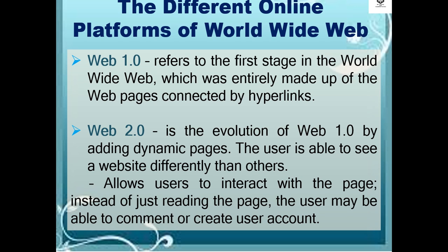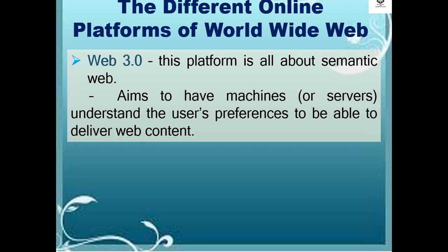Web 2.0 also allows users to interact with the page instead of just reading it — the user may be able to comment or create a user account. Web 3.0 is all about the semantic web; it aims to have machines or servers understand the user's preferences to be able to deliver web content.